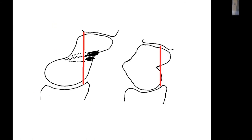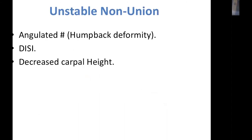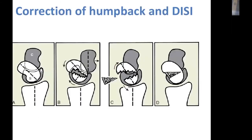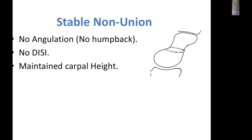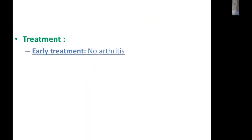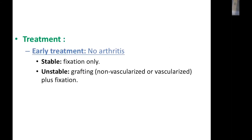Humpback deformity leads to loss of carpal height and DISI deformity. In unstable non-union there is angulated scaphoid, DISI, and decreased carpal height, while in stable non-union the scaphoid maintains its height. In humpback deformity it is essential to restore scaphoid height with an interpositional graft and fix it rigidly using headless compression screws. Stable non-union occurs mainly in proximal pole fractures with no DISI and maintained carpal height; treatment can be fixation alone.